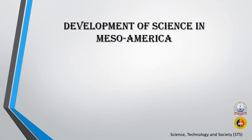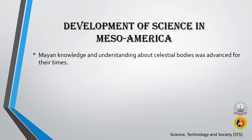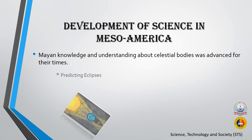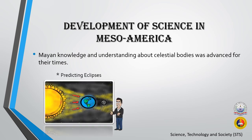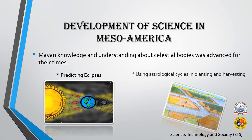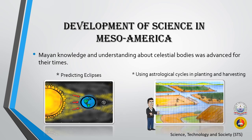Mayan knowledge and understanding about celestial bodies was advanced for their time. This included predicting eclipses and using astrological cycles for planting and harvesting.